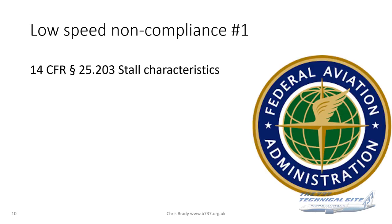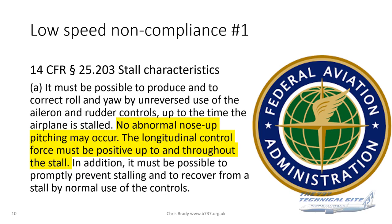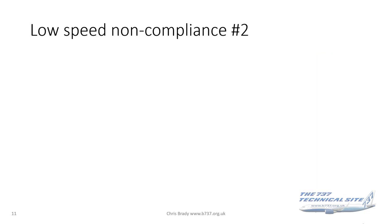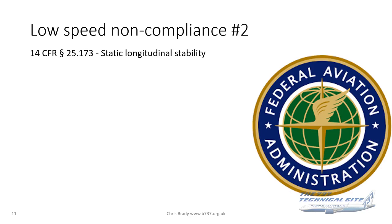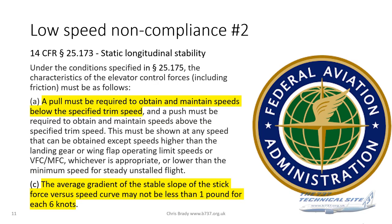The CFRs of concern are 14 CFR 25.203, stall characteristics, which says that no abnormal nose-up pitching may occur and the longitudinal control force must be positive up to and throughout the stall — which, as we saw from the graph, it wasn't. Also 14 CFR 25.173, static longitudinal stability, which states that a pull must be required to obtain and maintain speeds below the specified trim speed, and that the average gradient of the stable slope of the stick-force versus speed curve may not be less than one pound for each six knots.